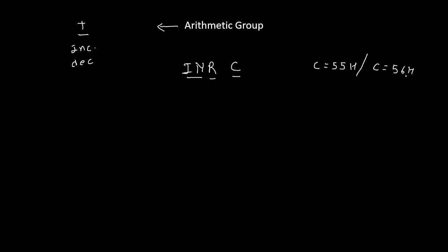We are incrementing the content of the C register by 1, so we are adding 1 into it — the answer becomes 56H. Addition is an arithmetic operation, that's why this instruction belongs to the arithmetic group. Since no number is given in this instruction, INR C is a one-byte instruction.